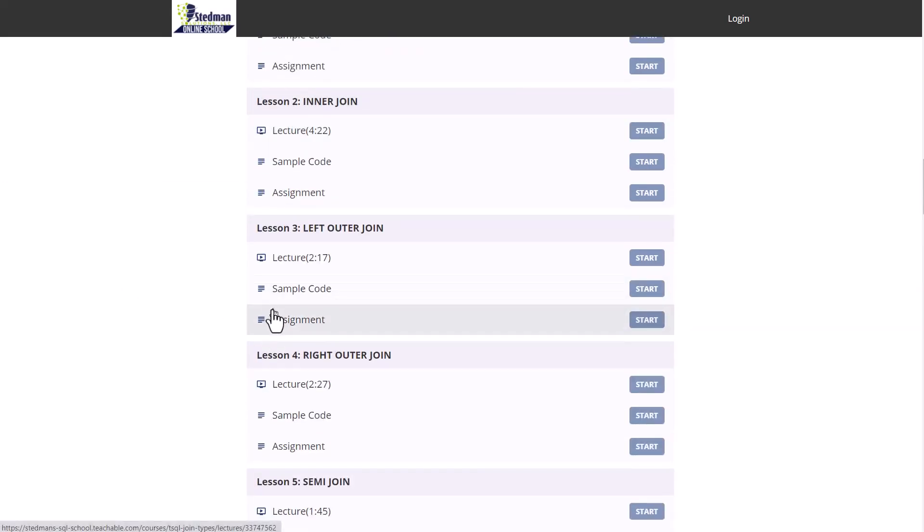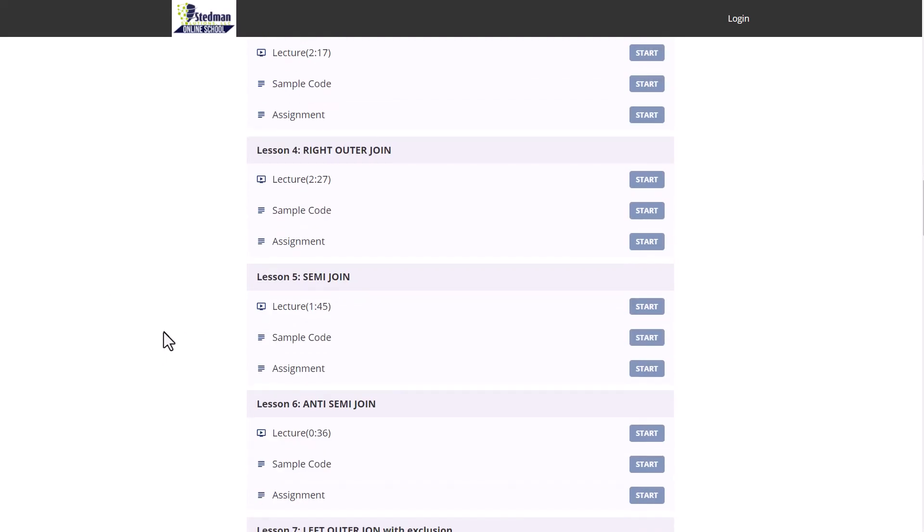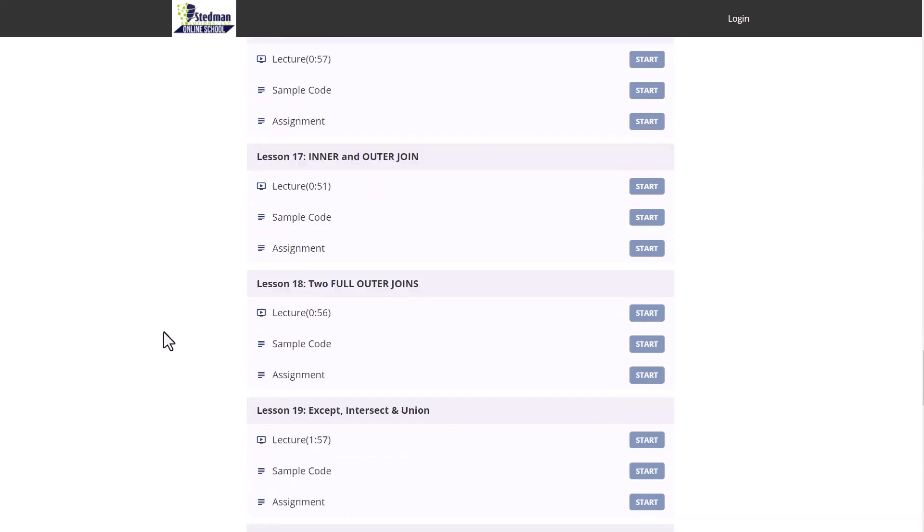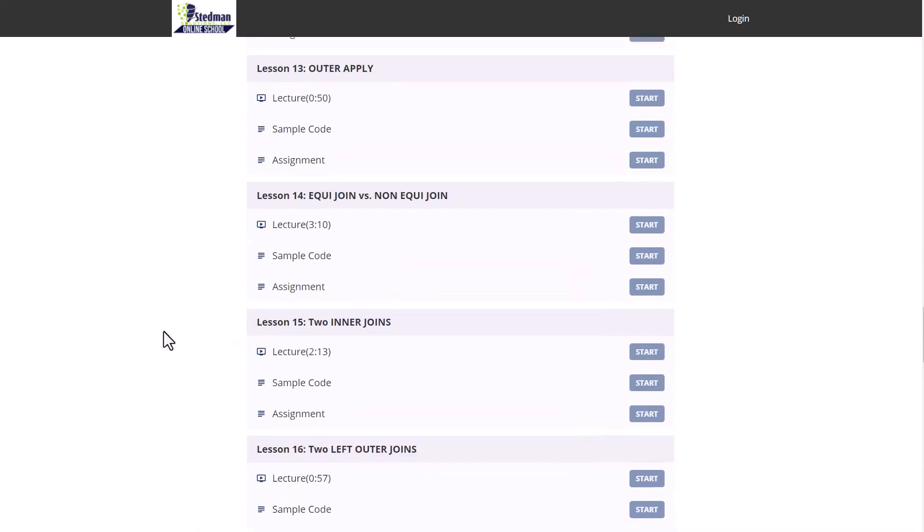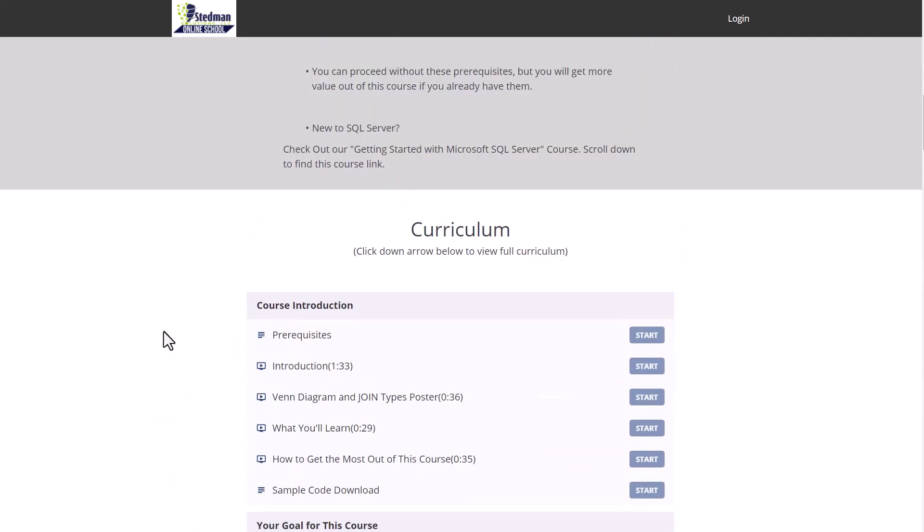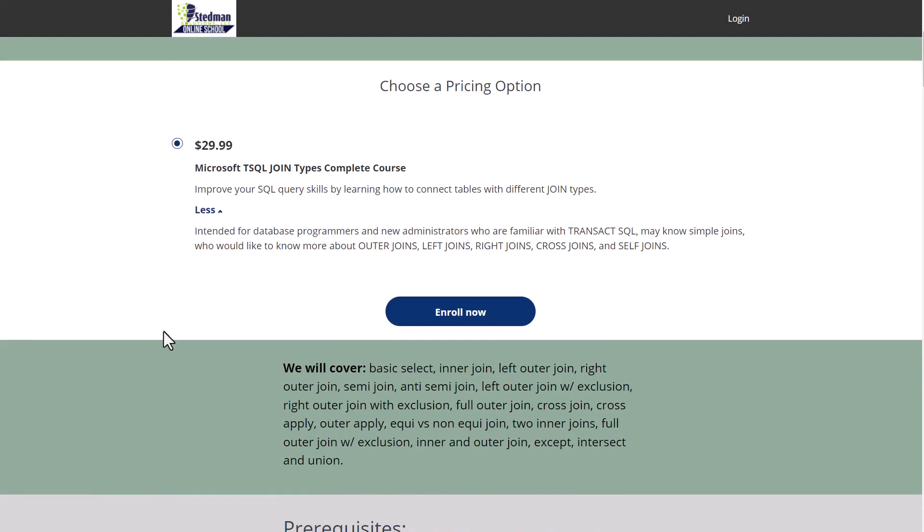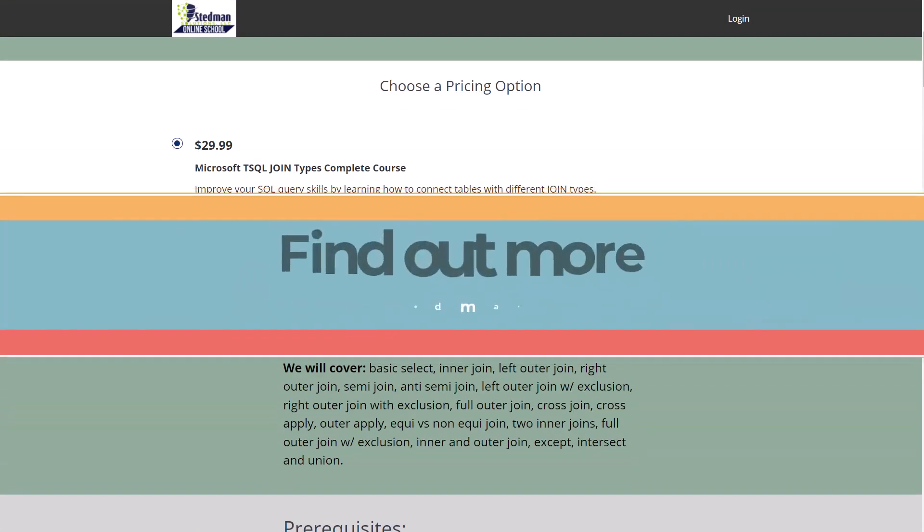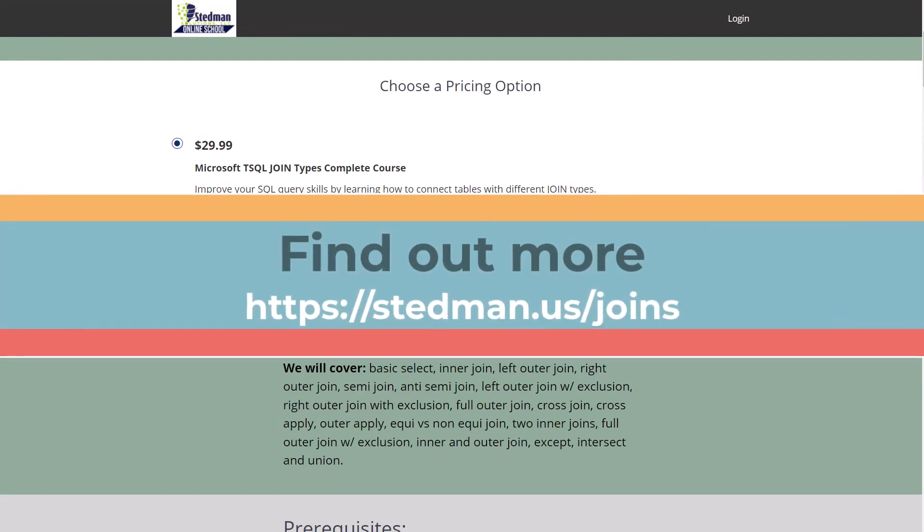Here's the curriculum. We've got quite a bit of detail that goes through all the different types of joins, including demo and lecture, sample codes, and then some assignments you can take and run with to figure out how to do it for yourself. This is one of the more popular classes that we offer from Stedman Solutions. So I would encourage you to check it out. To find out more about this class, you can go to stedman.us/joins. Look forward to seeing you in this class. Have a great day.